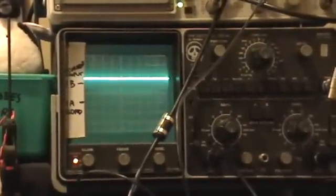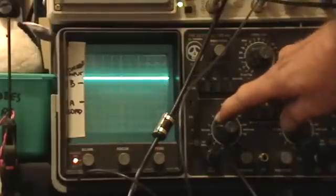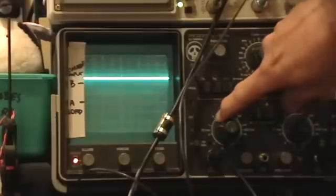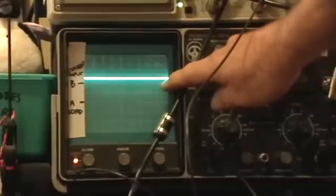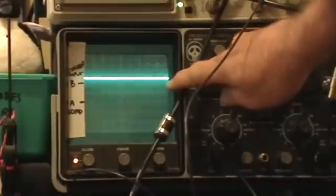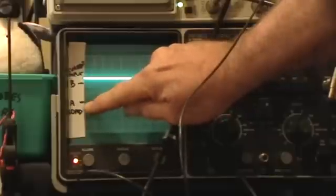I'm using a 10x attenuating probe. That means that the number you read on the voltage scale needs to be multiplied by 10. So we're on the 1 volt per division scale. You multiply that by 10. So up from where we are here,